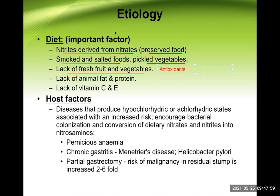Certain host factors are also important. Diseases that produce hypochlorhydria or achlorhydria are associated with increased risk. Hypochlorhydria is decreased HCl and achlorhydria is no HCl production. These conditions encourage bacterial colonization because hydrochloric acid — one of the first-line defenses of our body — is antibacterial. It also prevents the conversion of dietary nitrate and nitrite into nitrosamines.